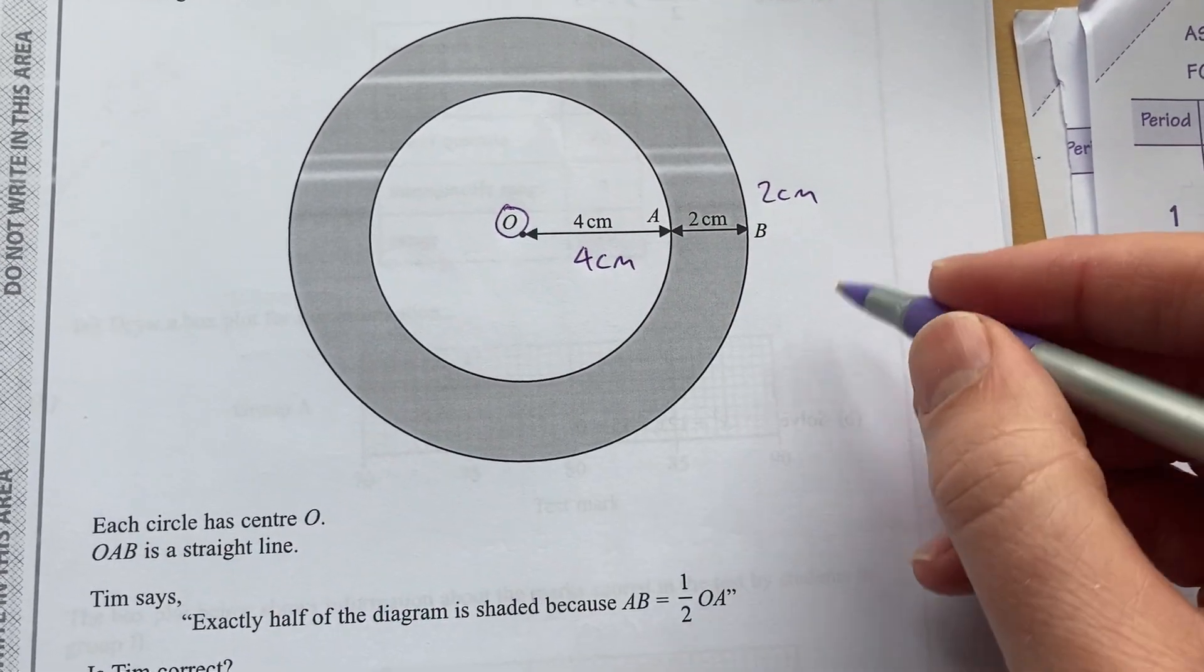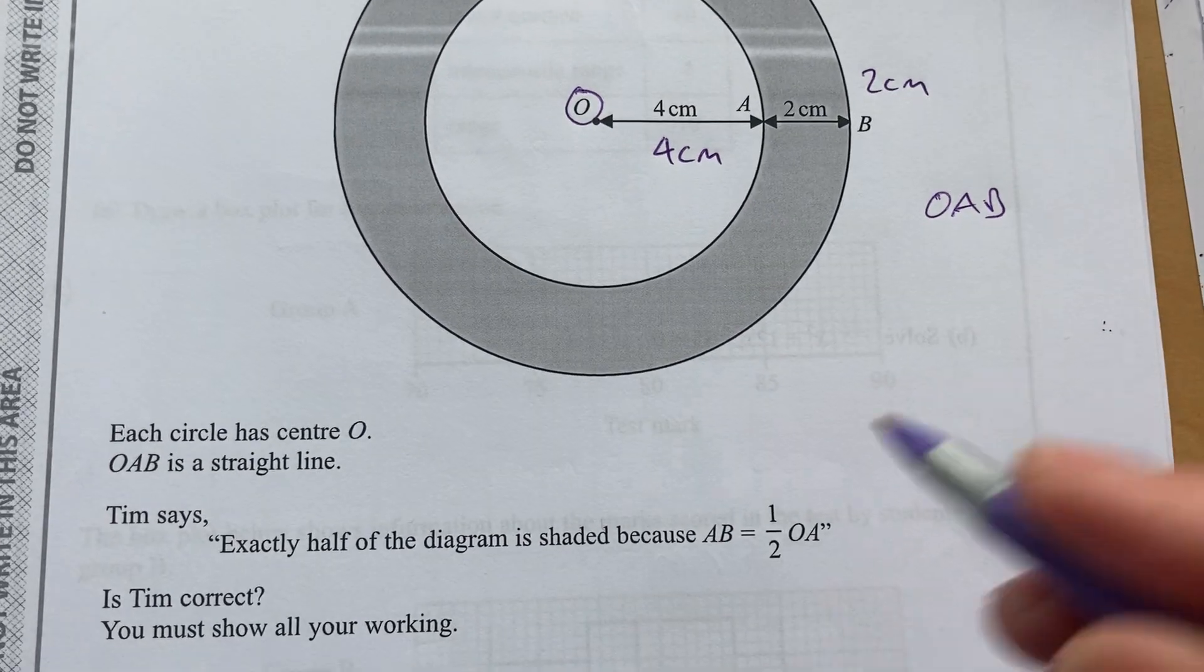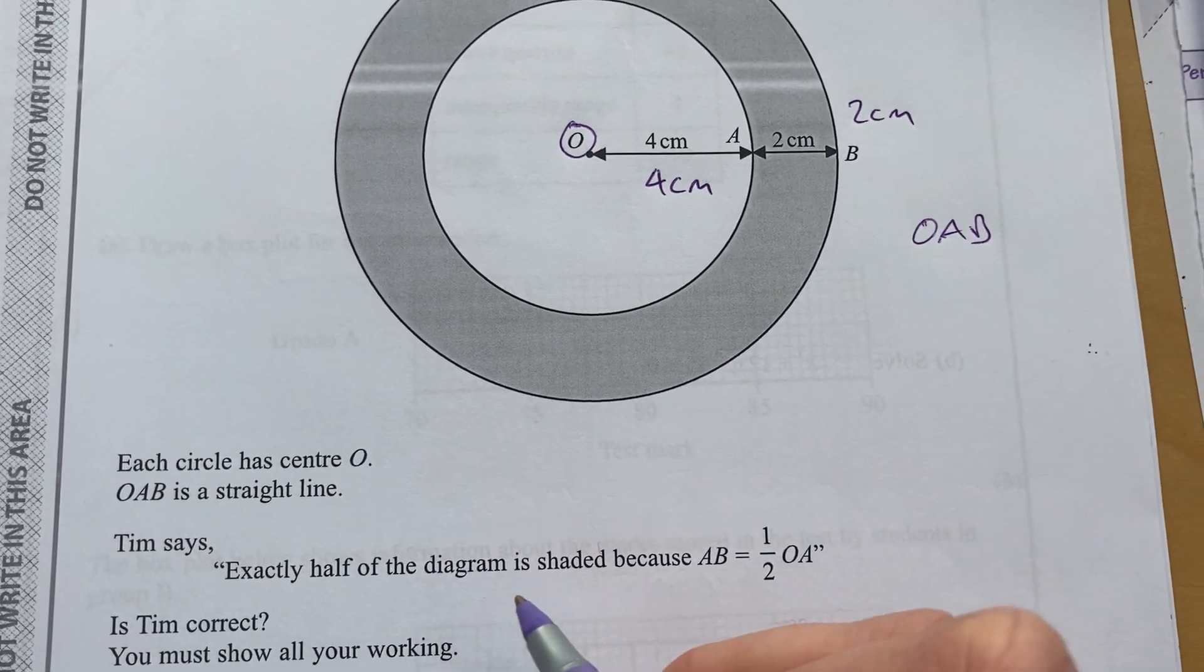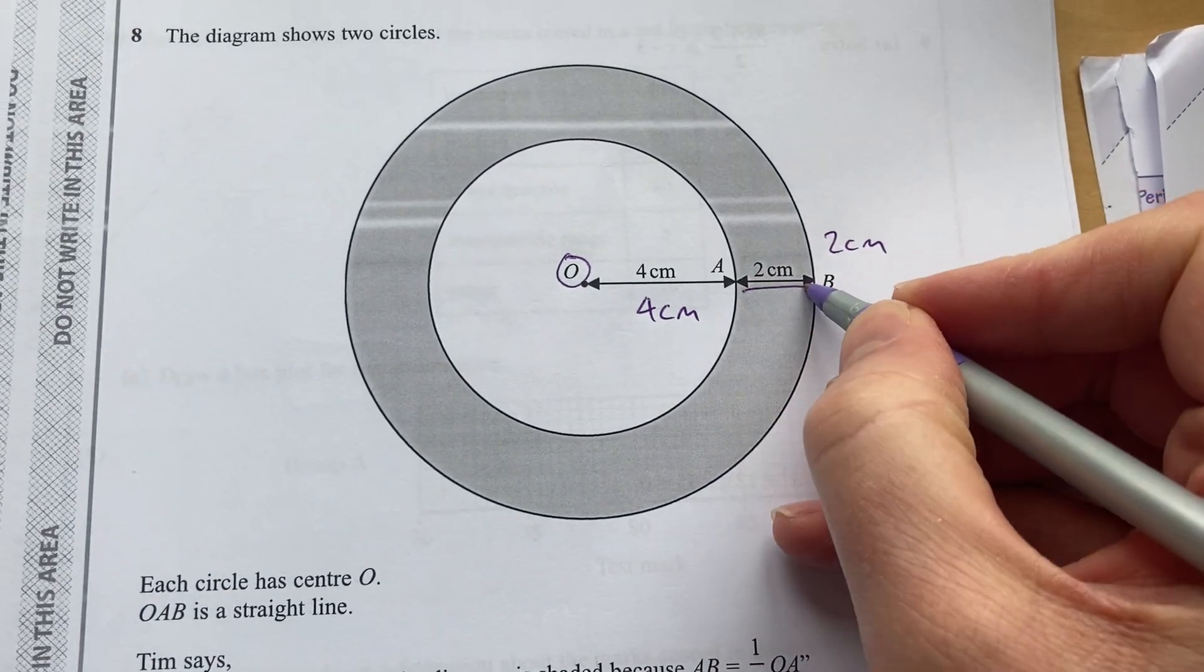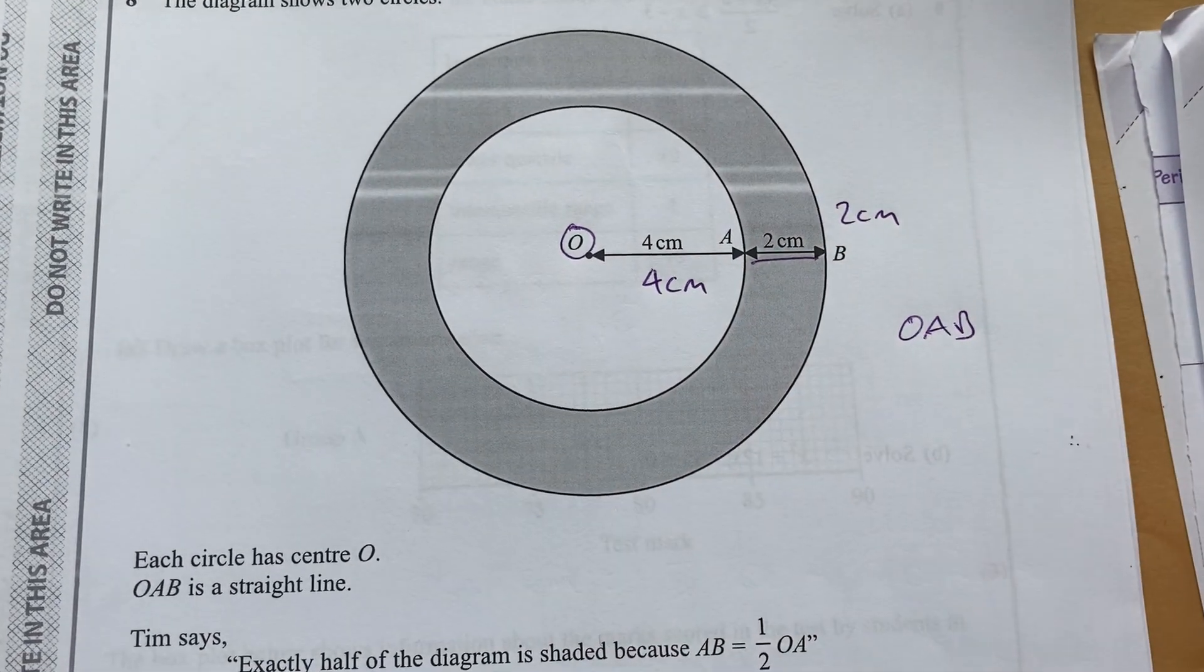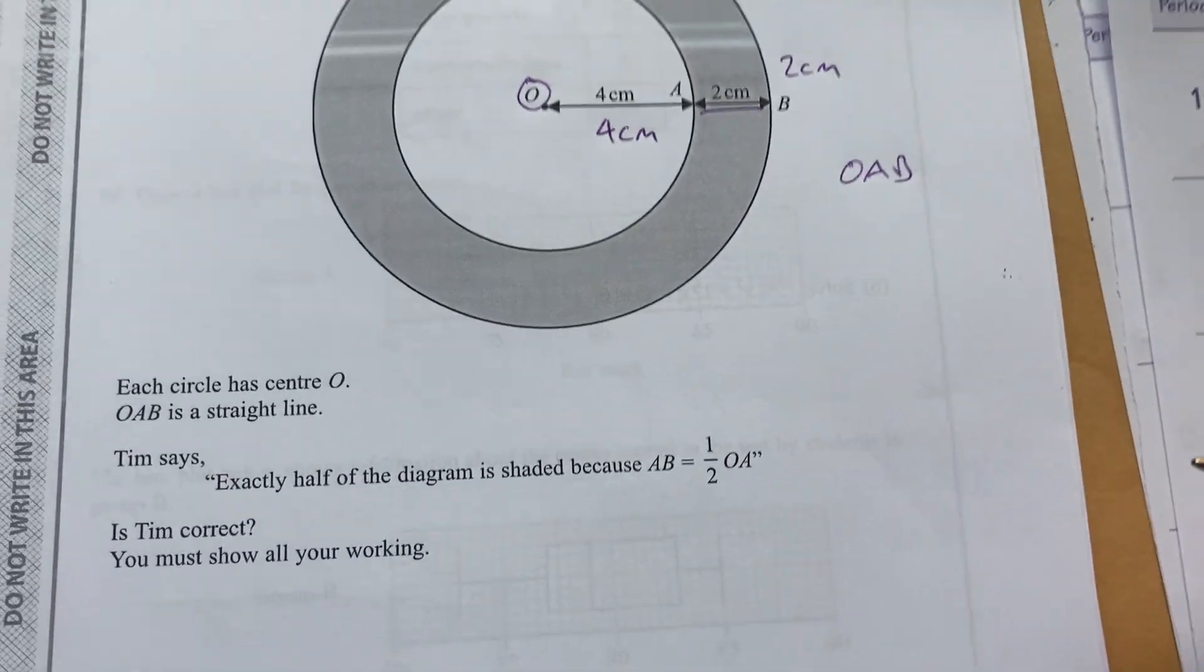OAB is a straight line. And Tim says exactly half of the diagram is shaded because AB is half of OA. That's half of OA. Right, let's see that.